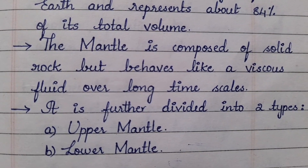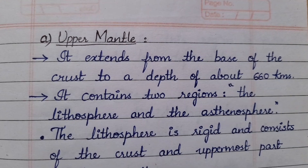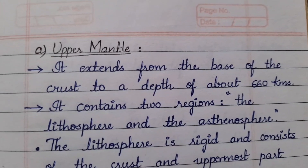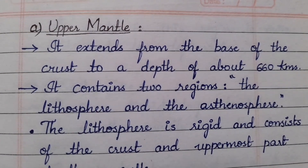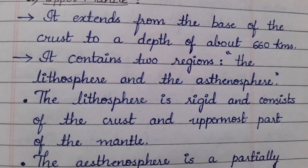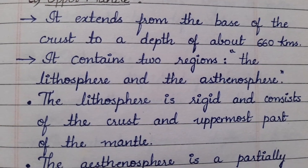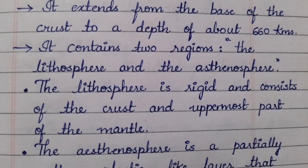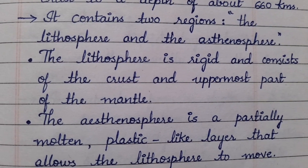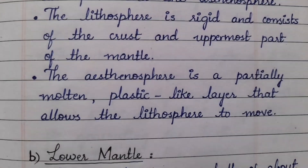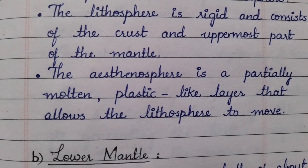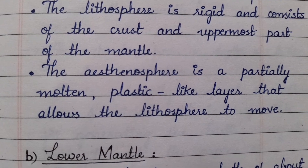The upper mantle extends from the base of the crust to a depth of about 660 kilometers. It contains two regions: the lithosphere and the asthenosphere. The lithosphere is rigid and consists of the crust and the uppermost part of the mantle. The asthenosphere is a partially molten, plastic-like layer that allows the lithosphere to move.